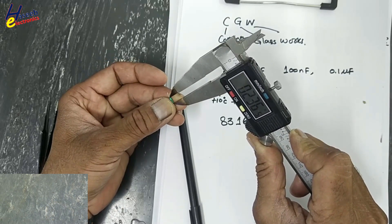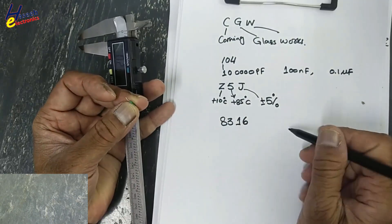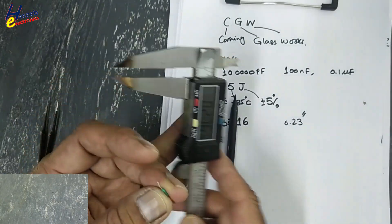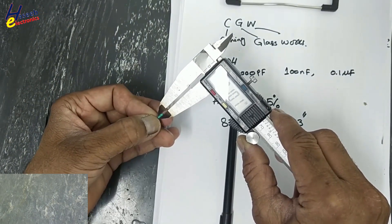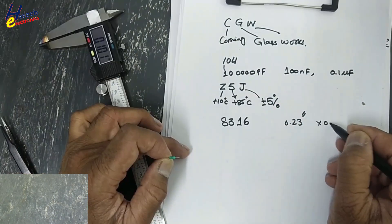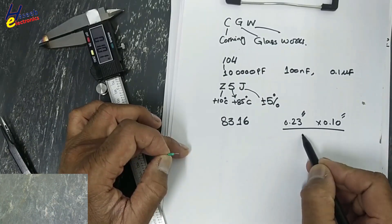Body length is 0.23 inches, diameter 0.10 inches. It is rated for 50 volts.